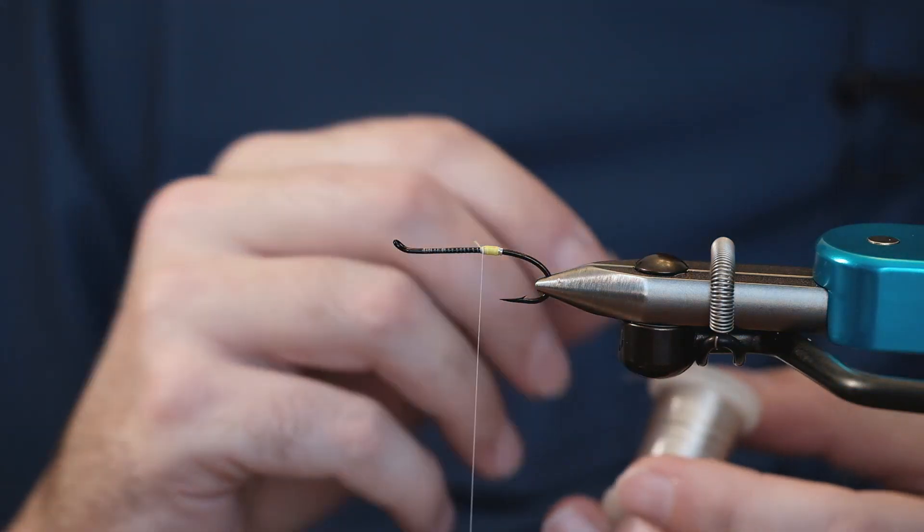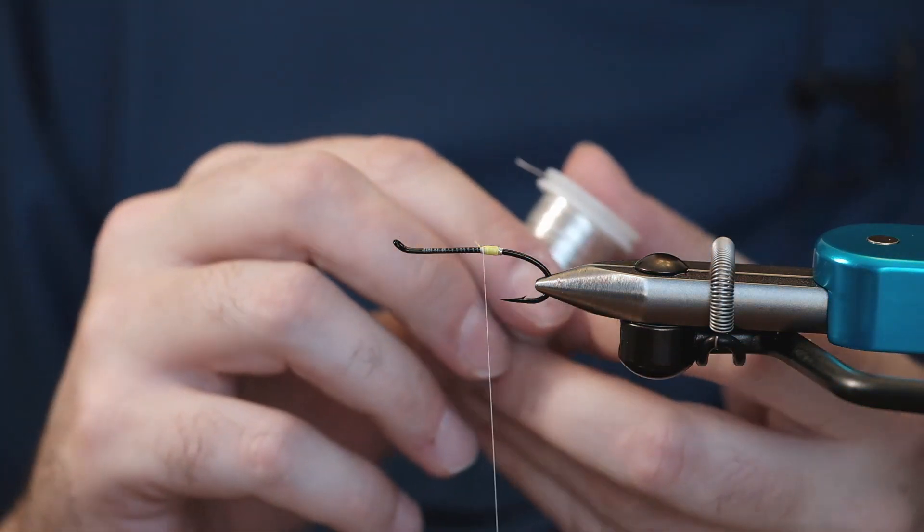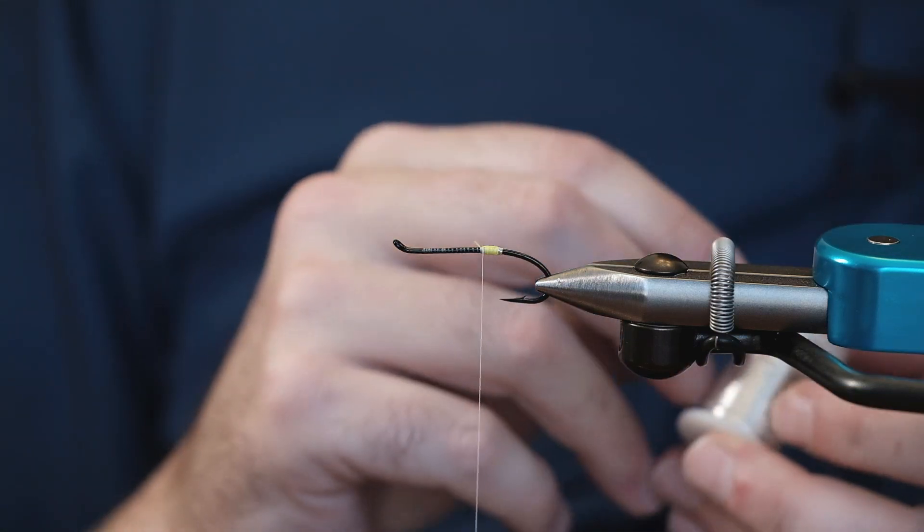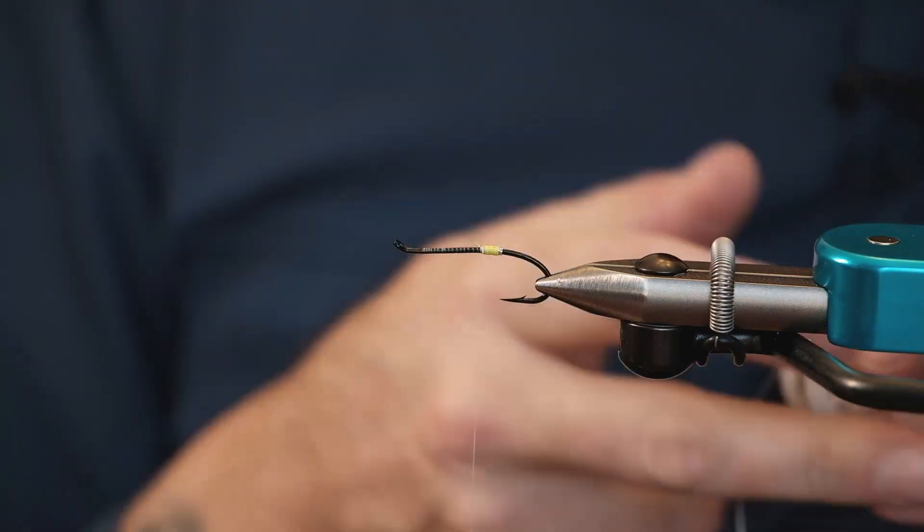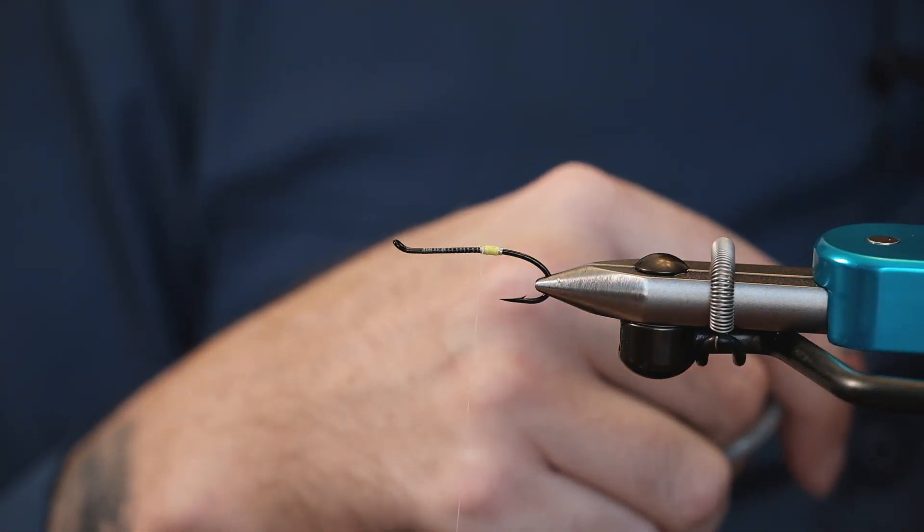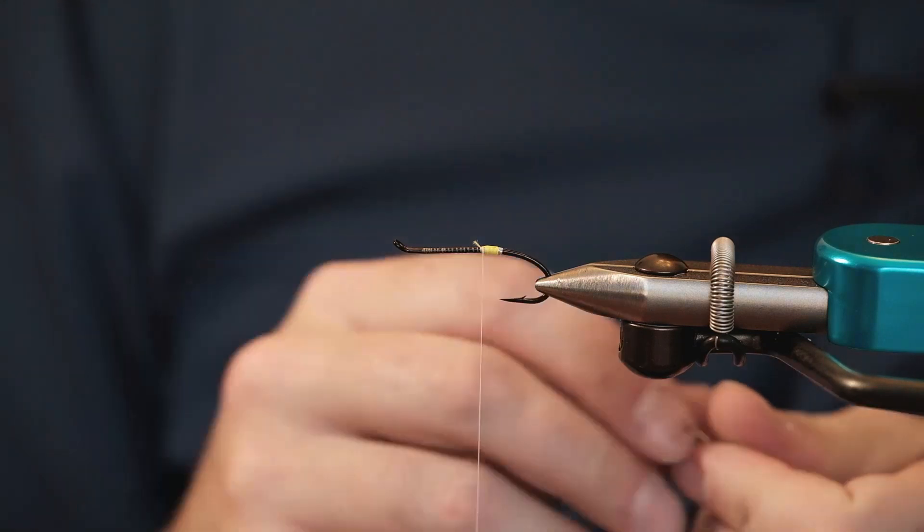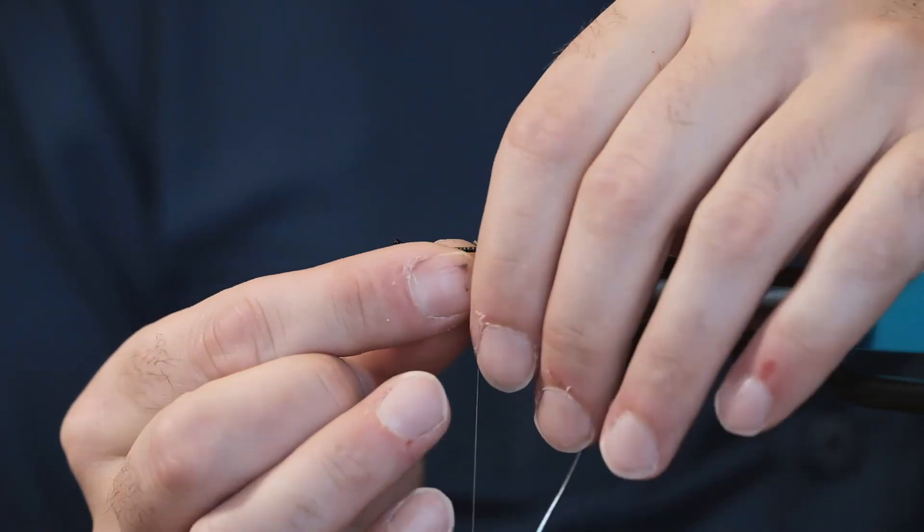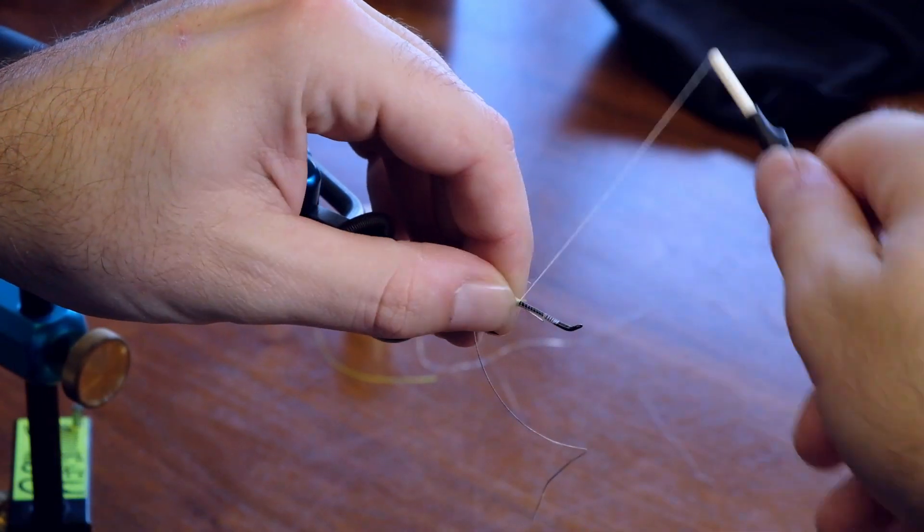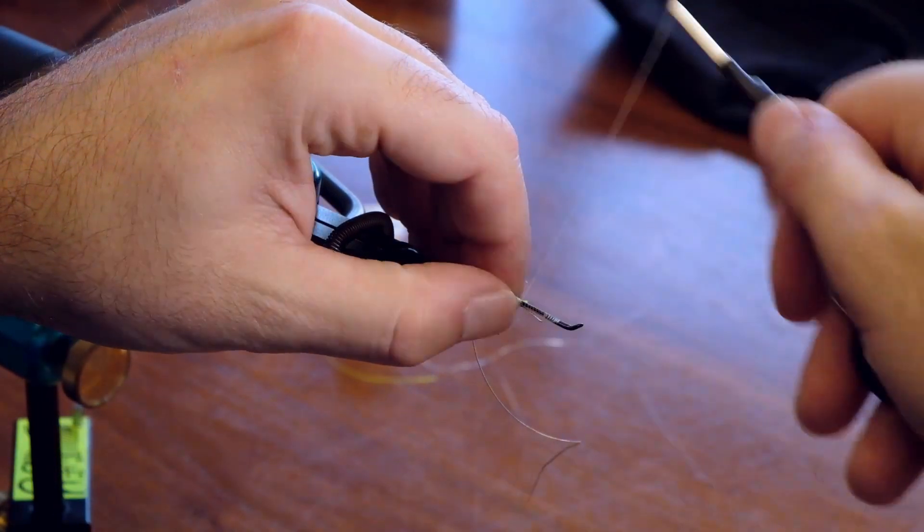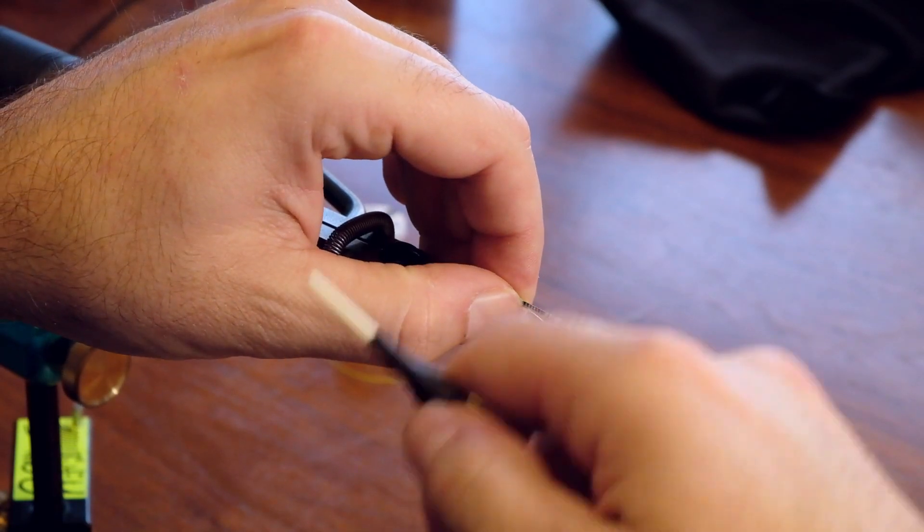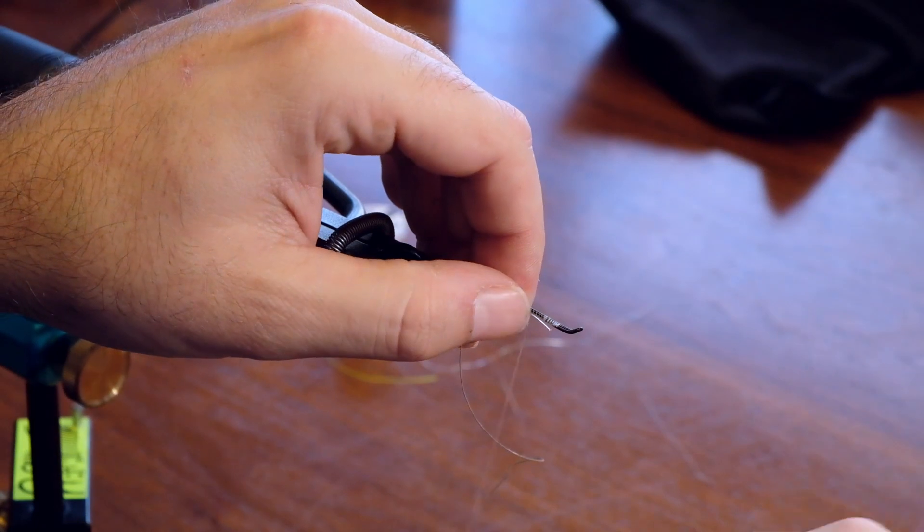Our next material that we tie in, but we won't be using till later, is the rib section that will be going down the body. For this we're using medium tinsel. On a hook this size, medium would be an appropriate rib size. Basically I tie enough that when it's tied in under, it will create bulk in the body.